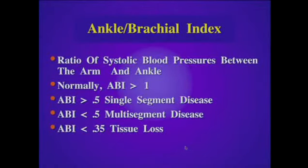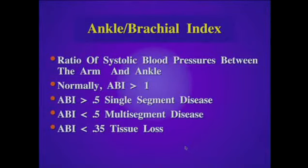The ankle brachial index is the ratio of systolic blood pressures between the arm and the ankle. Normally the ankle brachial index is greater than one. When it drops below one but is greater than 0.5, we usually consider single segment disease. When it drops below 0.5, we become concerned that the patient has multi-segmental disease. And as it drops even lower, we get concerned for tissue loss and gangrene.